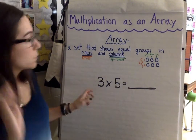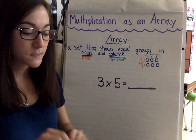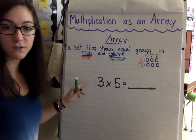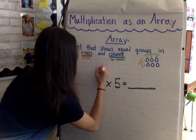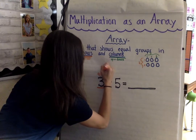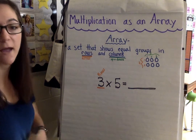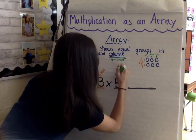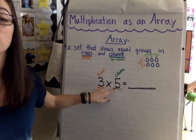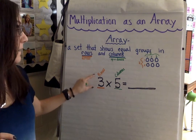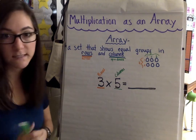When we think about a multiplication equation and how to solve it using an array, we have to look at our factors to tell us information. So the first factor — our three — tells us how many rows to make. Our second factor — the five — tells us how many columns to make. You can also think of that as how many to put in each row, because if you have five columns, each row will have five as well. So it's however you like to think about it.